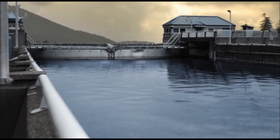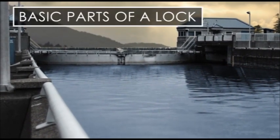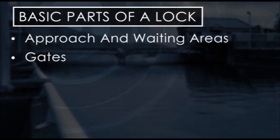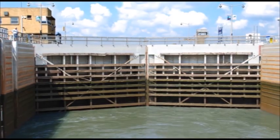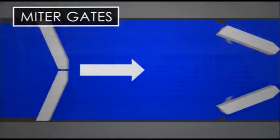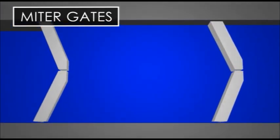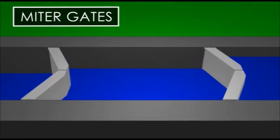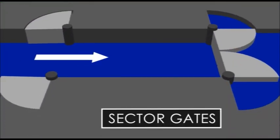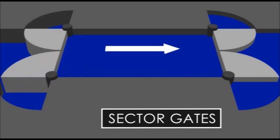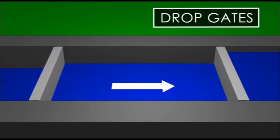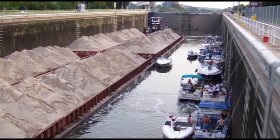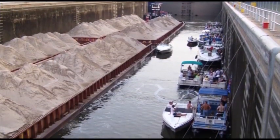Before boating on a river that will include locking through, you should know the five basic parts of a lock. They include the approach and waiting areas, gates, chamber, guide walls above and below the chamber, and the exit area. There are three different types of gates. Miter gates point upriver when closed — the weight of the water and machinery keeps them closed, and they are used when water above the lock is always higher than below. Sector gates are used when the water level may be higher on either side; they appear pie slice shaped and are held closed mechanically. Drop gates drop below the water level and boats go right over the top of the gate. Although there are differences between locks, the concept for locking through is the same.